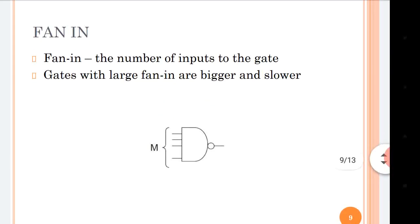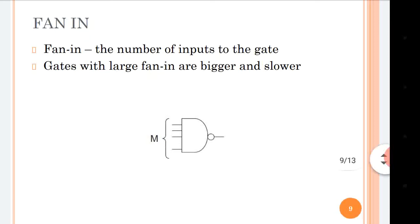Fan in is very simple — it is the number of inputs a logic gate has. Gates with larger fan in are bigger and slower. For example, an AND gate with M number of inputs has a fan in of M.